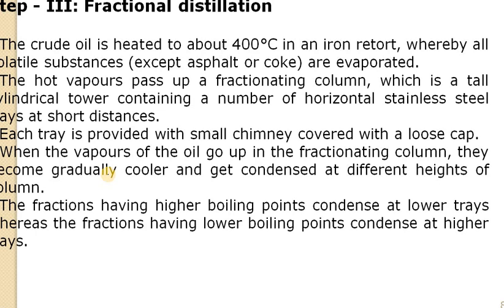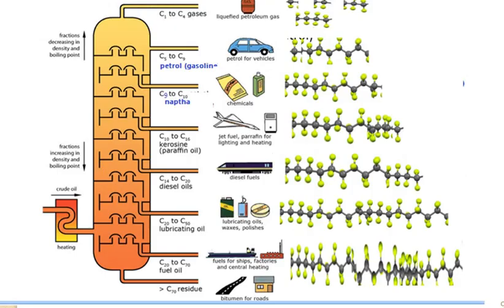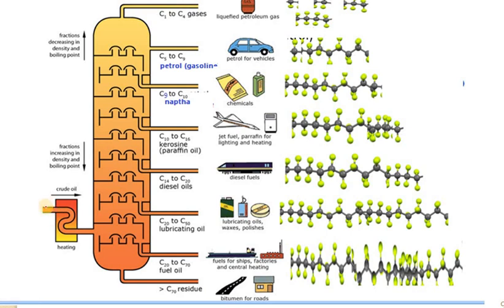In the fractional distillation setup, the crude oil is allowed to pass through a preheater which is maintained at 400 to 450 degrees centigrade.